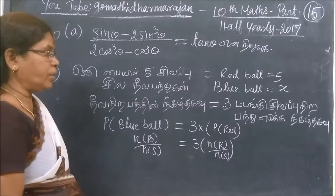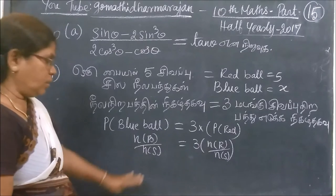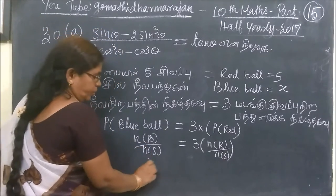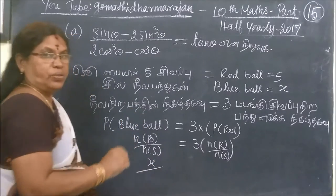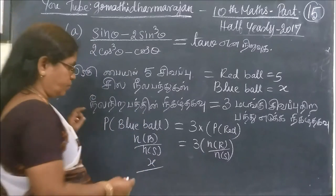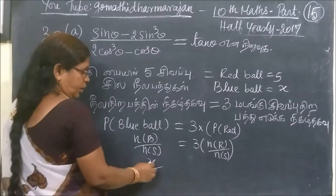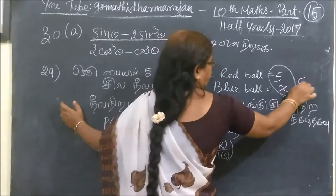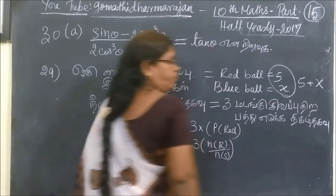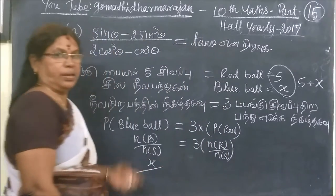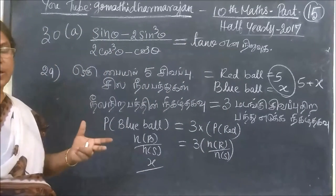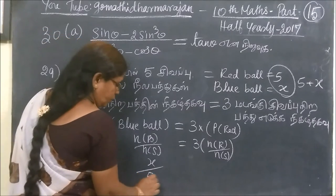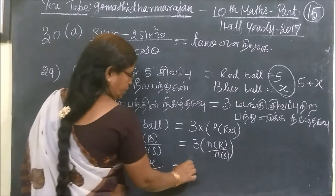Now we have marked here. We have the blue bar, we have x. We have x and x has been given, so x will be given. S is the key. Now the bar is 5 plus S.